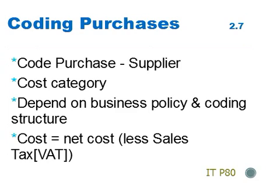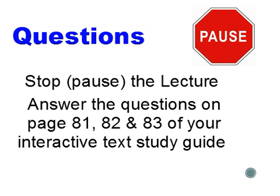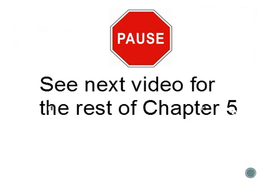In order to code a purchase, you will need to know how suppliers are coded and which category of cost the purchase falls under. How the cost is coded will depend on the business's policy and coding structure. The cost of the purchase to the company will be the cost less the sales tax (VAT). Stop the lecture and answer the questions on pages 81, 82, and 83 of your interactive text study guide. See the next video for the rest of Chapter 5.